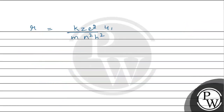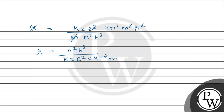Expanding, r = k·Z·e² / m × (4π²·m²·r²) / (n²·h²). One m cancels with m, and one r cancels with r², so we get the formula for r: r = n²·h² / (k·Z·e²·4π²·m).